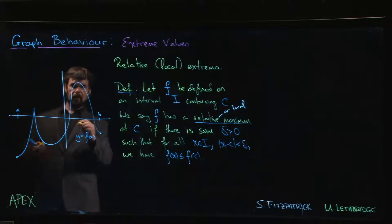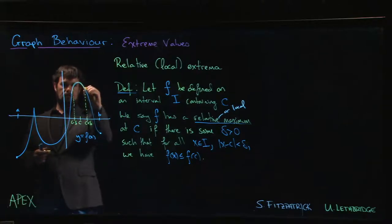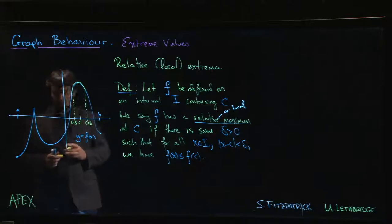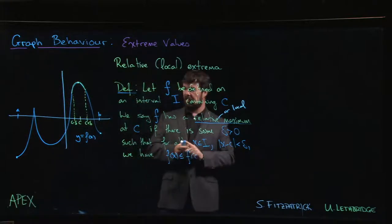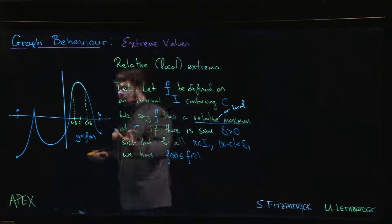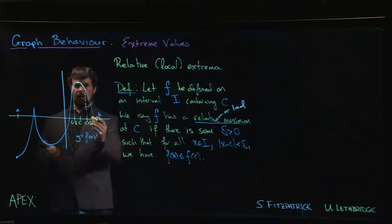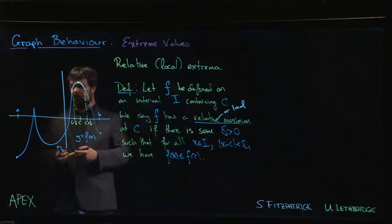We can see that in a couple of places, certainly here. If this is c, and here's c plus Delta, here's c minus Delta, then on this portion of the graph from here to here, that is certainly the largest y value that we see. Now in this case it happens that that's also the largest y value for the graph as a whole. There is no other y value that's larger.